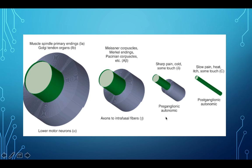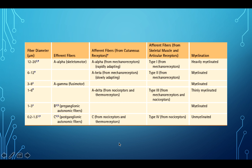Non-myelinated is slow. The A-alphas are very myelinated and responsible for proprioception. The C-fibers — the pain guys — are unmyelinated and slow from a transduction standpoint. Just know A-alpha is fast, C is slow.